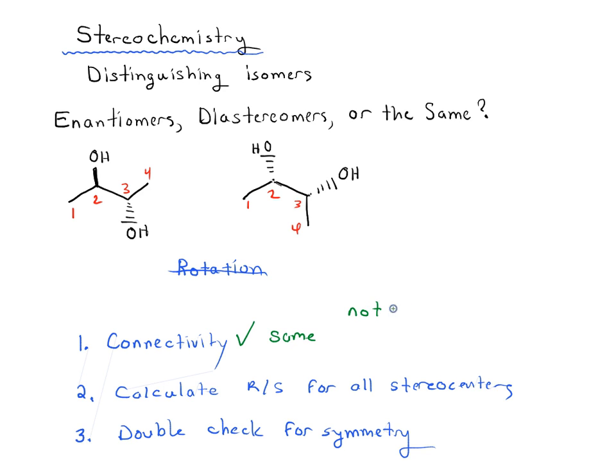So they're not constitutional isomers. I mean they're clearly isomers, but they're not constitutional isomers. They have the same connectivity. That means we're gonna have to calculate RS for all stereocenters, which means we need to identify the stereocenters first. Hopefully you can see that each of these molecules has two stereocenters. We've got a stereocenter here and here, here and here. And it might also help to draw in the hidden or implicit hydrogens in each case.